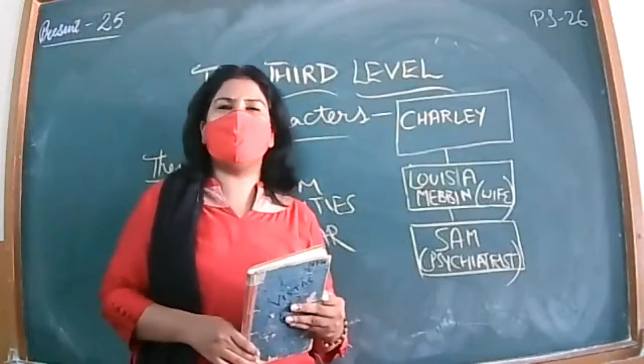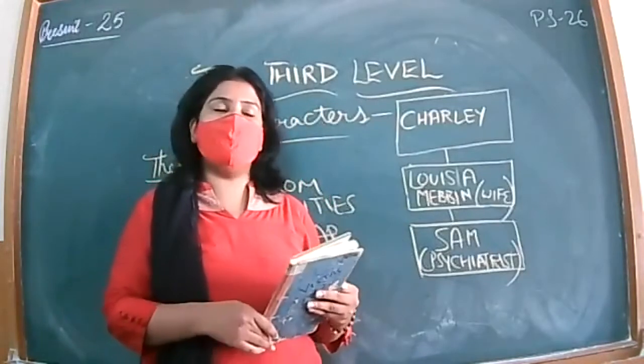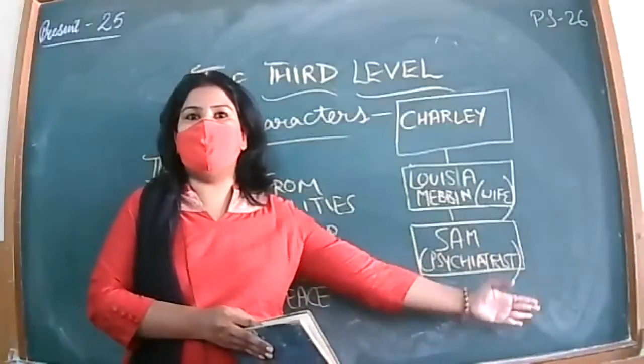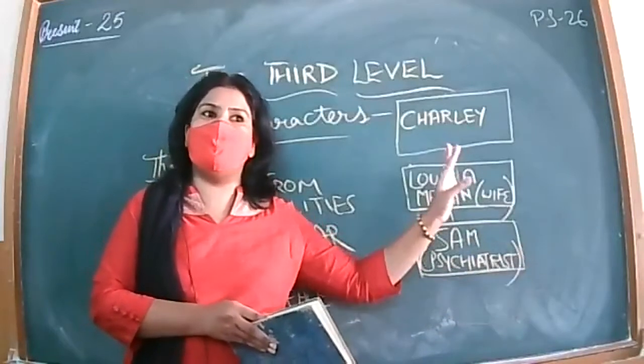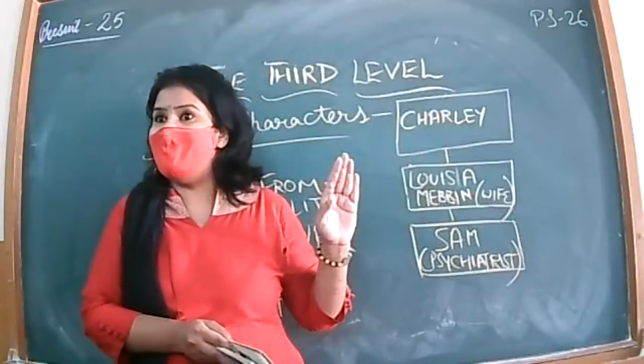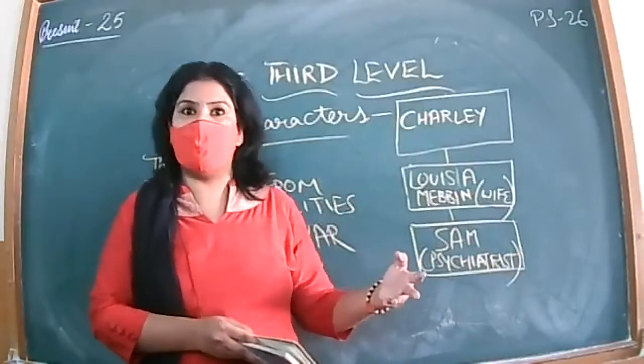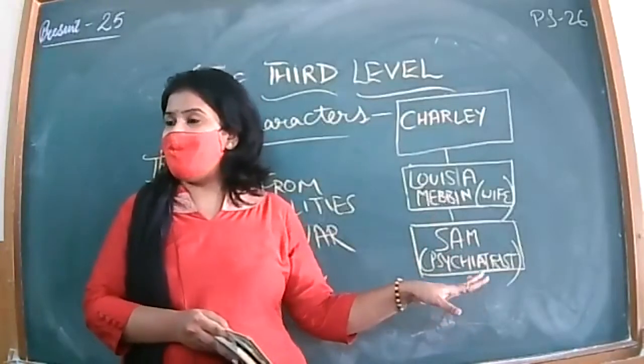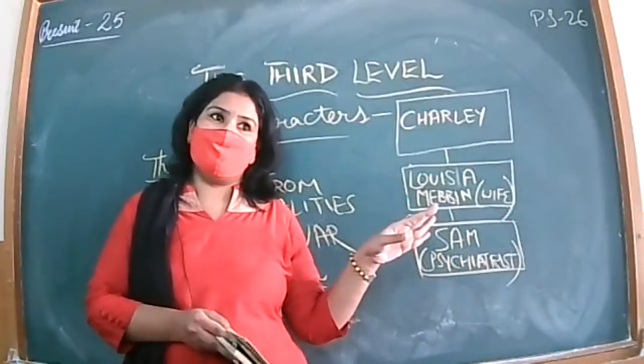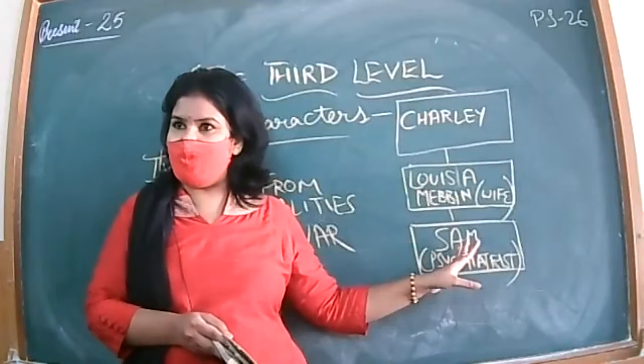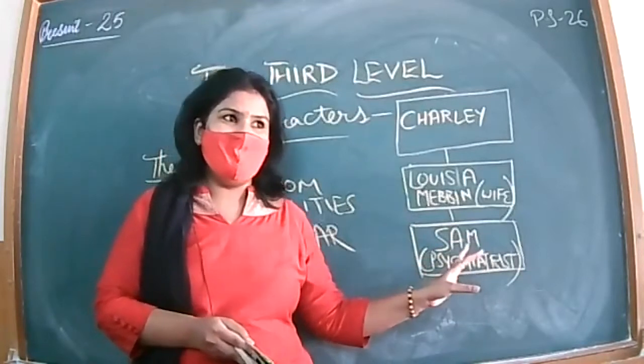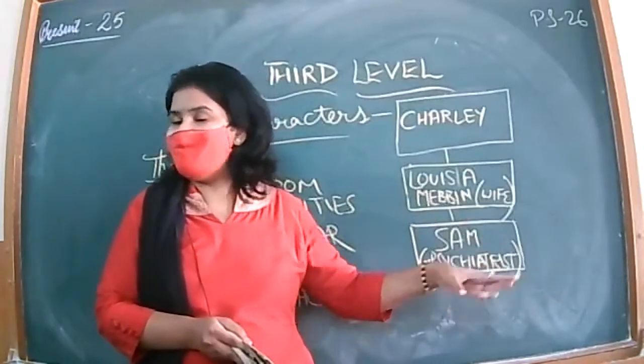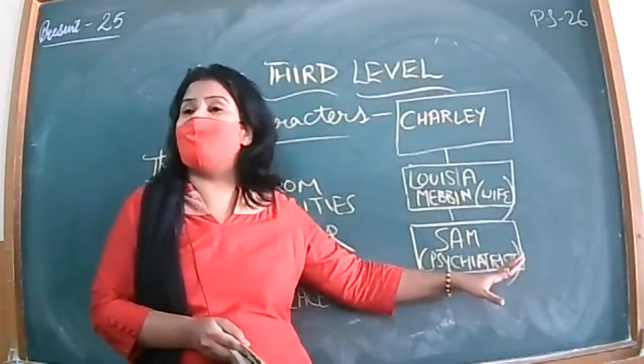There is no third level existing, it is all his imagination. He won't be able to find it and his wife will tell him to consult a psychiatrist. At the end we get confused about what exactly happened. Even Sam the psychiatrist, whose work is to listen to the patient carefully, at the end Charlie will find a letter from Sam himself.